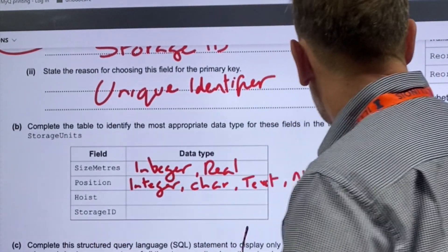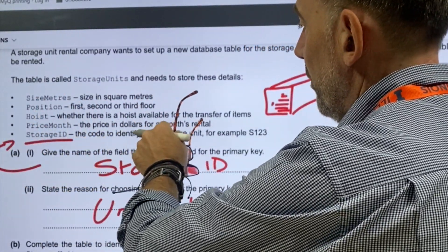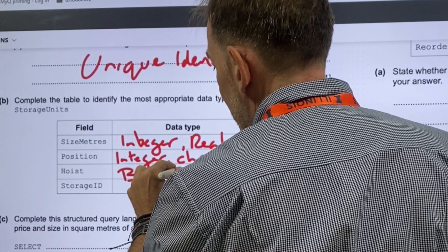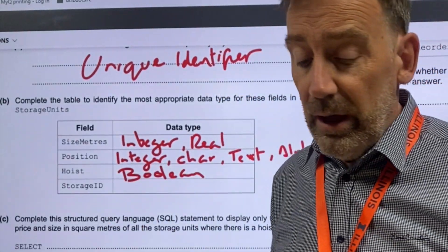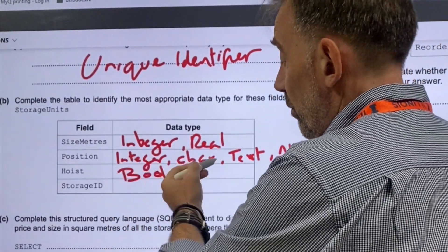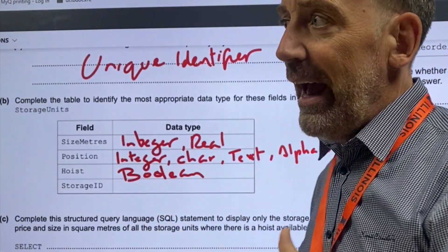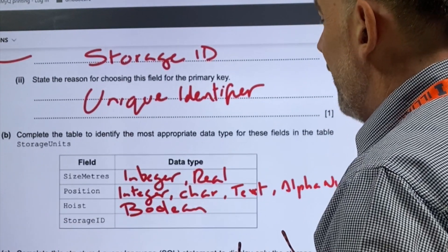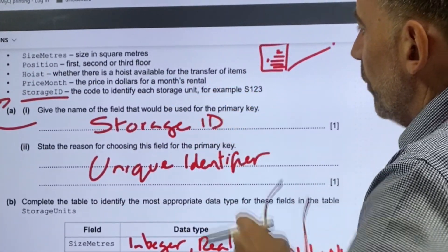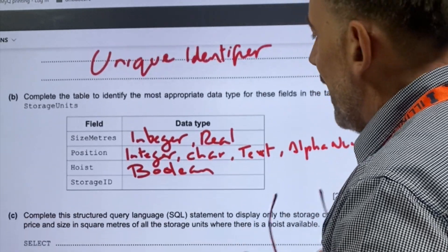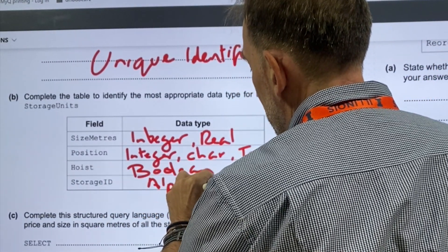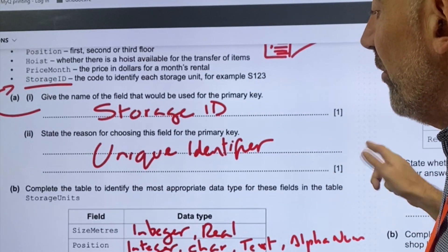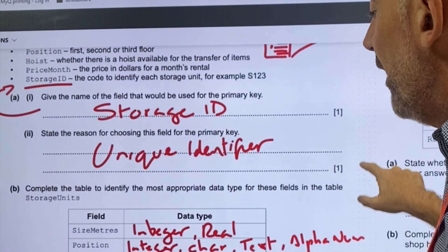Hoist — whether the hoist is available for transferring the item — I think what they're trying to get there is it's going to be a boolean. Yes or no. Is there a hoist? Is there not a hoist? It could be words — we could use text or alphanumeric — but I'm thinking what they're trying to get there is a boolean. And then finally, storage ID — looking at S123, I would say that is going to be alphanumeric. We could still store that value as text, but I'm going to stick with alphanumeric for that one.